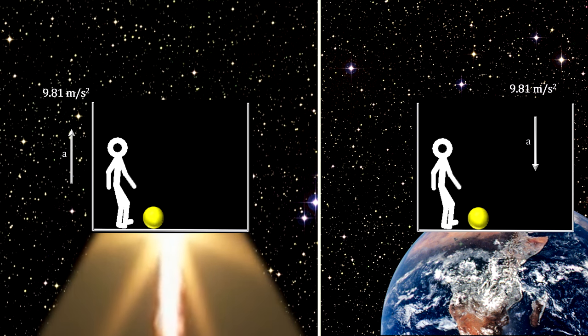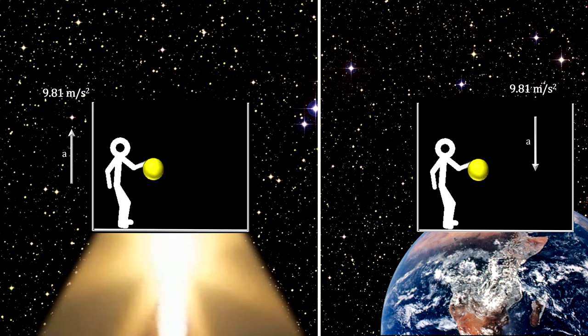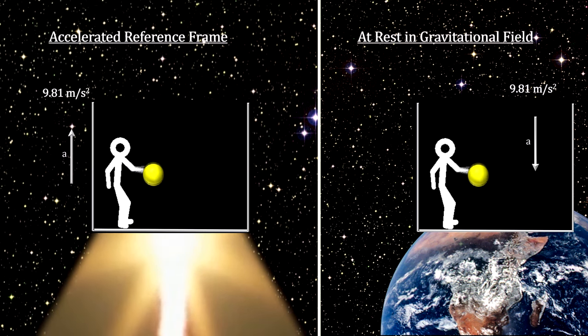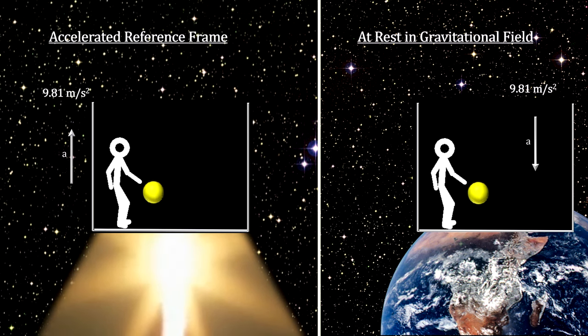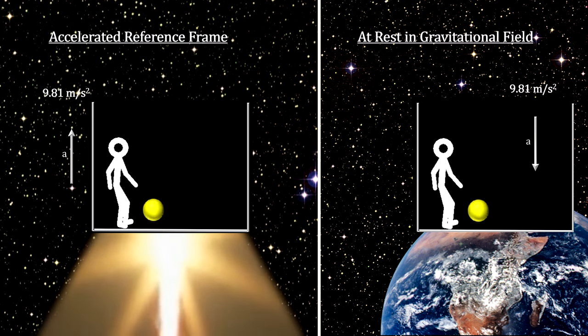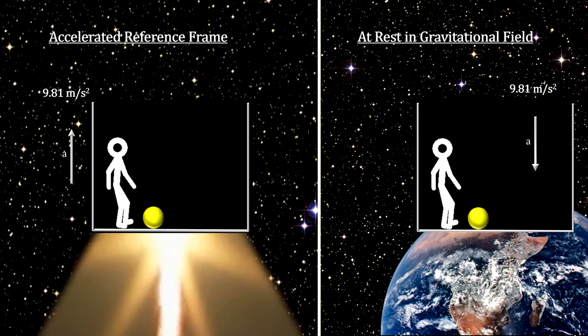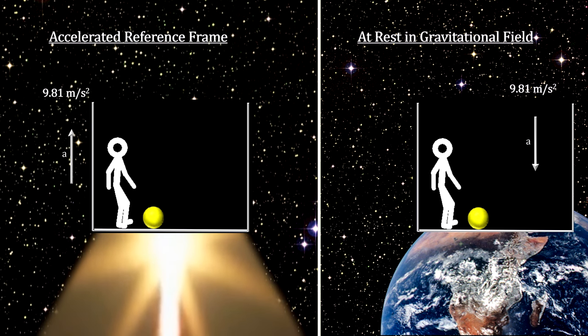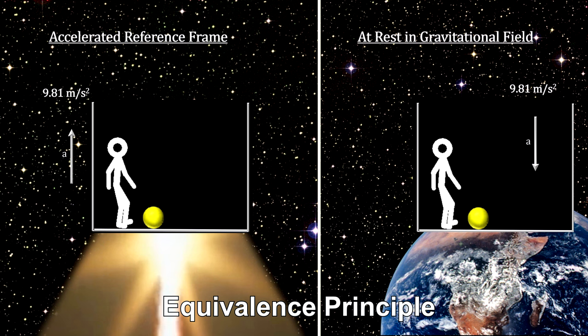In fact, the person in the elevator cannot tell the difference between the two situations. Is he out in space being accelerated by some force, or is he at rest on Earth being accelerated by Earth's gravity? As far as the laws of physics are concerned, being accelerated and sitting still in a uniform gravitational field are equivalent. This is Einstein's equivalence principle.